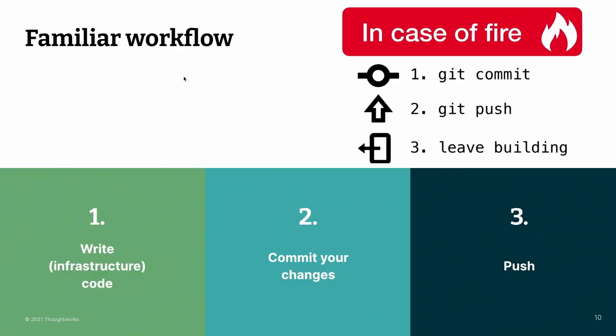If you have one well-defined process, getting a proper audit log is easy. If you have to chase down changes executed locally on someone's workstation, it's really tricky — if not impossible — to track those changes. With CI, you can provide developers the familiar workflow of writing code, committing changes, pushing, and you're done. We want the same workflow for infrastructure code.